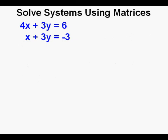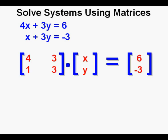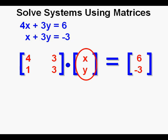Let's look at this first system of equations: 4x plus 3y equals 6, and x plus 3y equals negative 3. We check that each equation is in ax plus by equals c form — and they are. In conventional matrix notation, the coefficients of x and y are arrayed in a matrix, the variables go in order, and the constant terms are placed to the right of the equal sign.